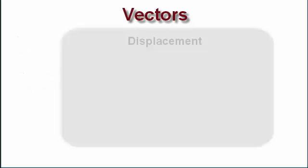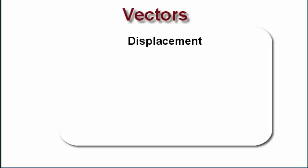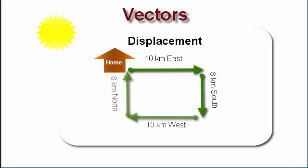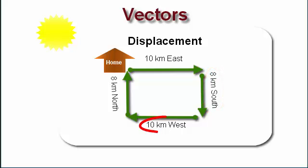Today I'll be focusing on displacement, and I will continue to use my previous example where I talked about it being a nice sunny day and we're taking a drive around our neighborhood. In this example, there were four different displacement vectors involved: the first one being 10 kilometers east, 8 kilometers south, 10 kilometers west, and then 8 kilometers north.